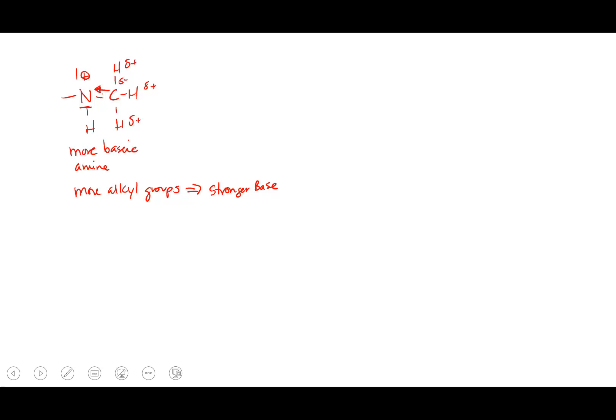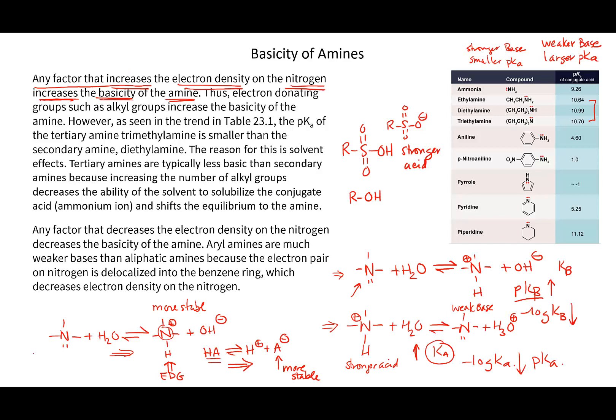There is a problem. When we look at the trend in the chart, as we add alkyl groups we seem to be making a weaker base as the pKa of the conjugate acid goes up. Going from 10.64 to 10.99 to 10.76 - wait, what happened there?